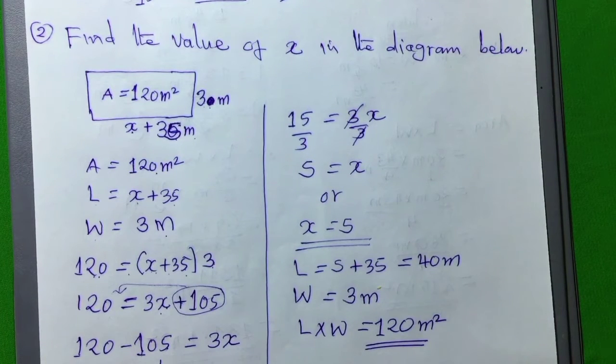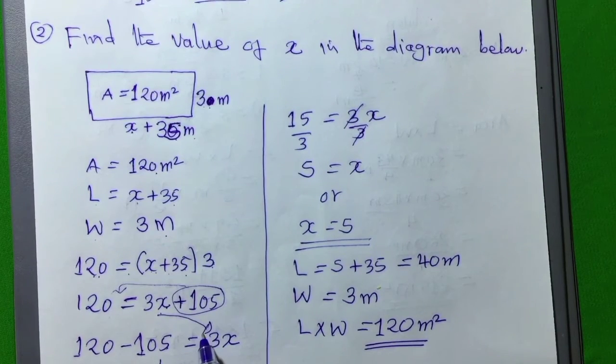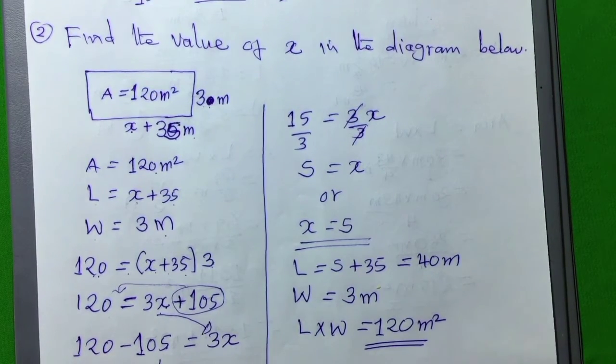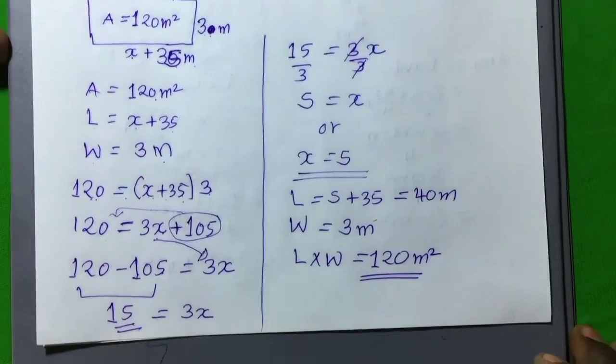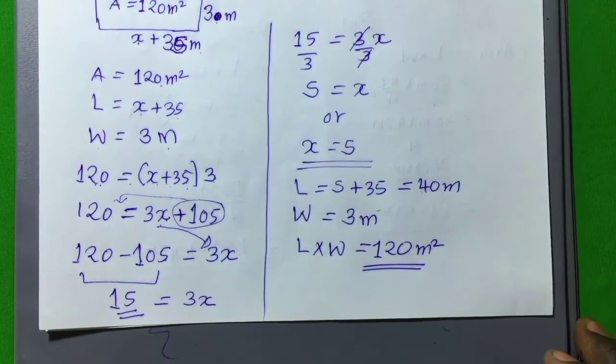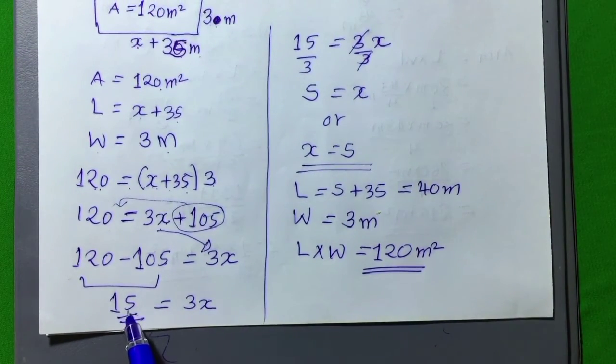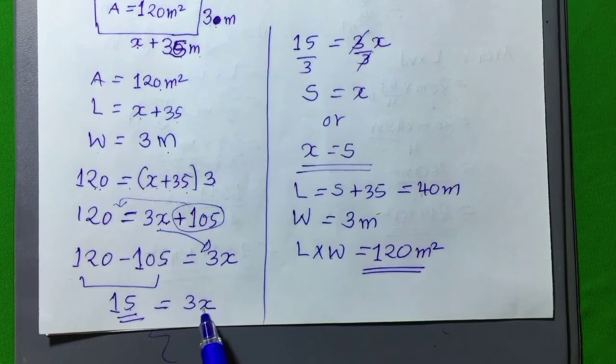120 minus 105, the answer is 15, and already here we will remain with only 3x. Then what can we do? What can we do now with this?